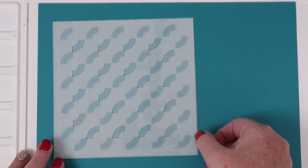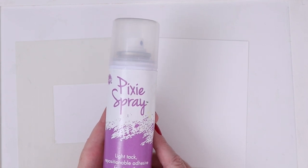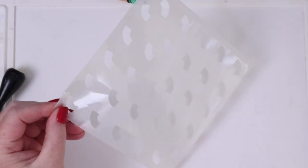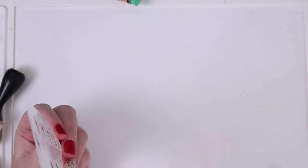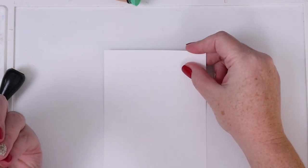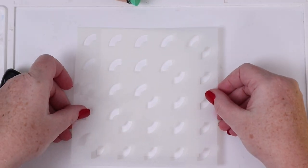Whenever I work with stencils, I use my Thermoweb Pixie Spray and Waffle Flower water media mat to hold the stencils in place. So I spray the back of stencil number one with Pixie Spray, then place my A2 card panel over the overspray on the water media mat, then I place the stencil on top.